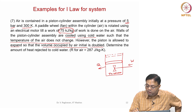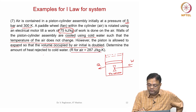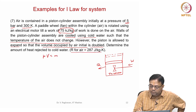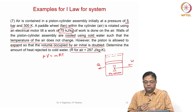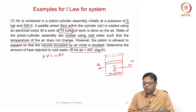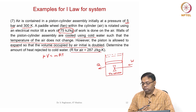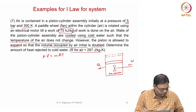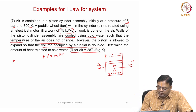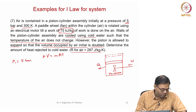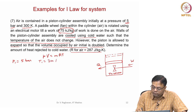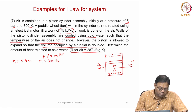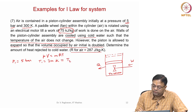We use pV = mRT, where R for air is 288. Given data: p1 = 5 bar, T1 = 300 Kelvin. This is an isothermal process.